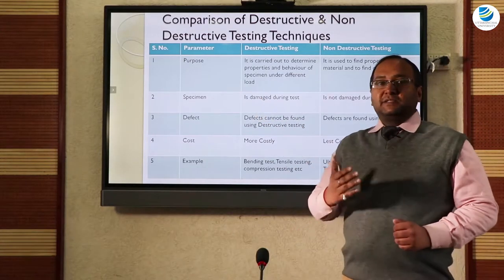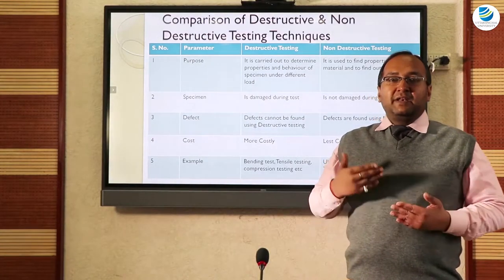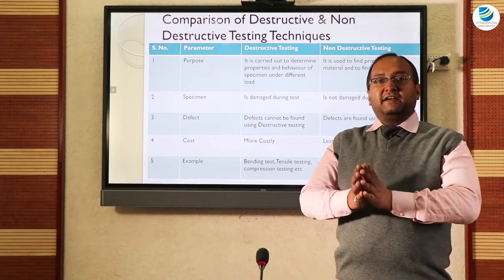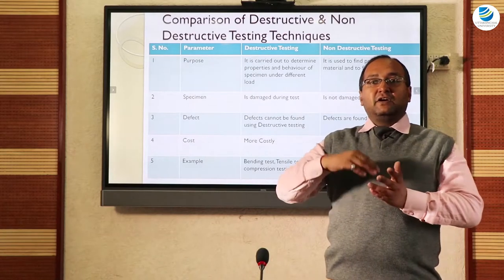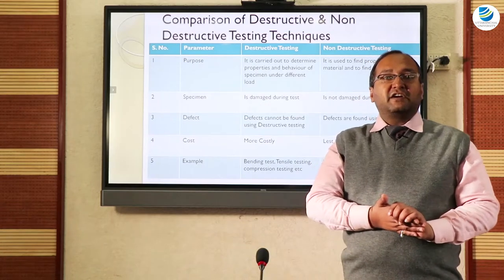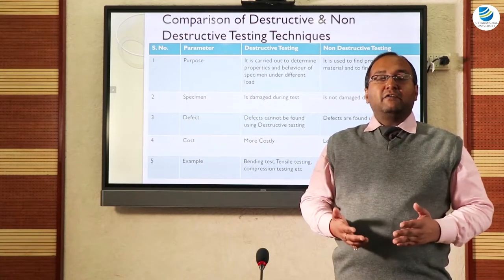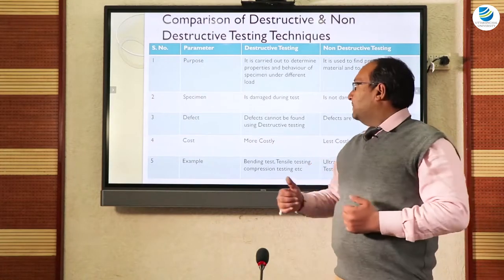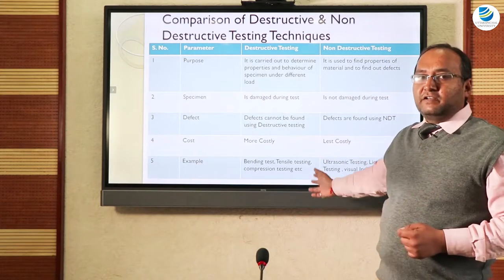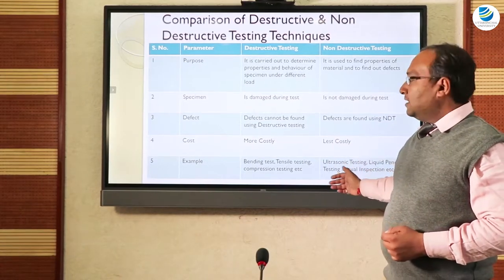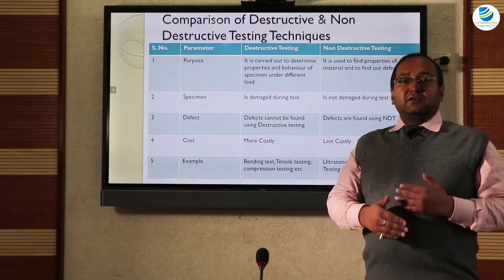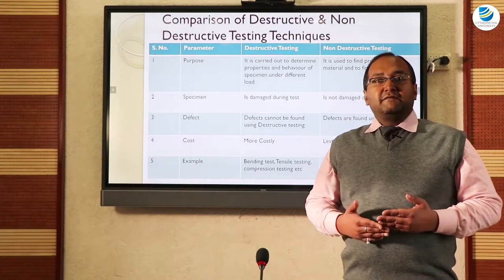The second parameter is the specimen. In destructive testing, the specimen breaks and cannot be reused, but in non-destructive testing the material remains intact — the defect does not increase, and the material is reusable. Defects cannot be found using destructive testing, which is used for calculating material properties; NDT is used to find defects in a structure. Cost is more for destructive testing and slightly less for NDT. Examples of destructive testing include bending and tensile tests; NDT examples include ultrasonic testing, radiography, eddy current testing, and visual inspection.